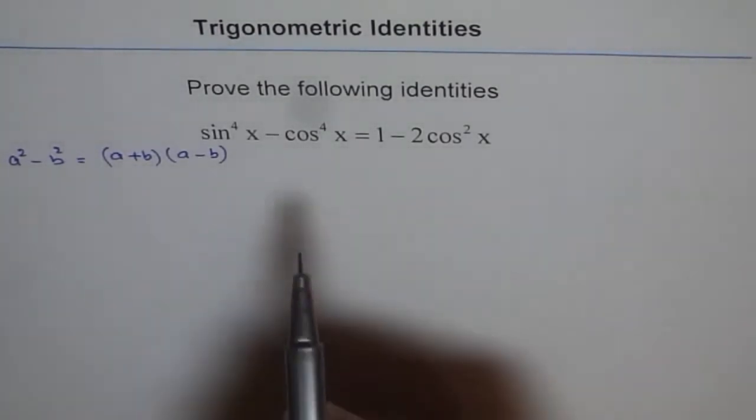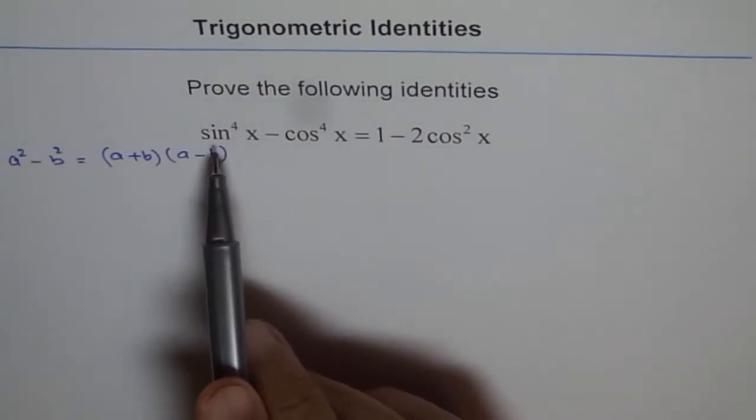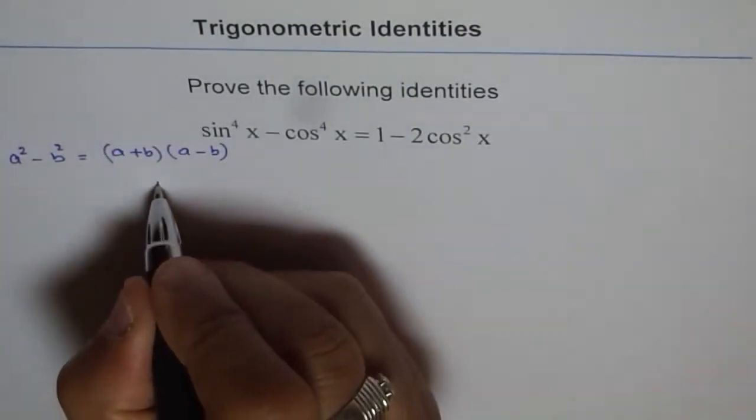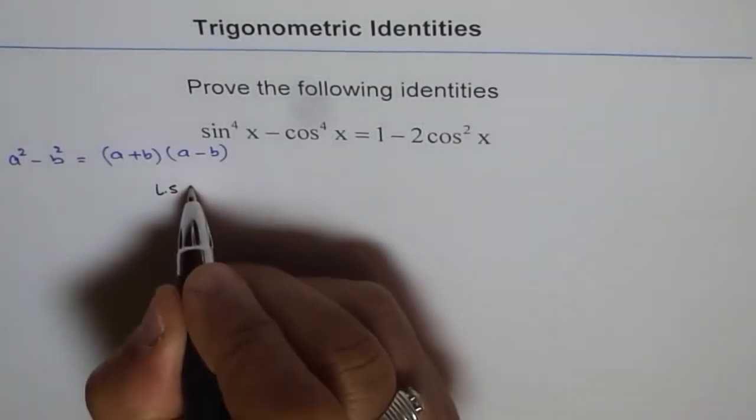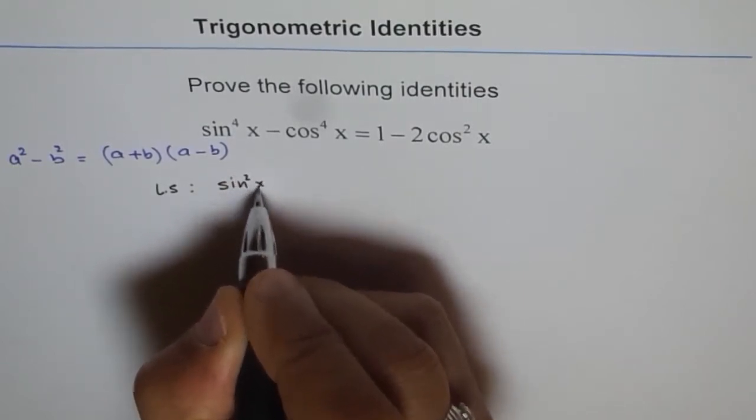Let's do that. We can start with the left side. I can write this as (sin^2x)^2 - (cos^2x)^2.